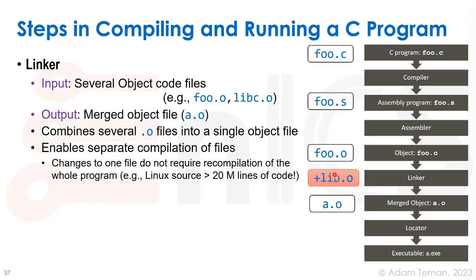This enables us to change a single file without recompiling the whole program. For example, Linux source code has over 20 million lines of code. If we had to recompile everything every time, that would be a big deal. Instead, we can just recompile parts and relink them.